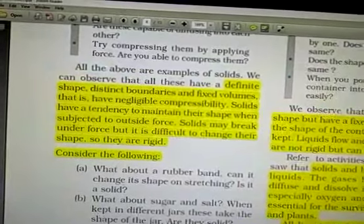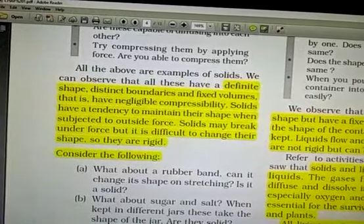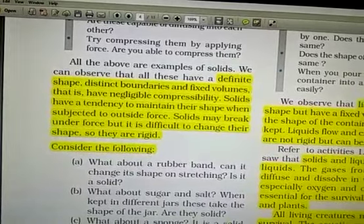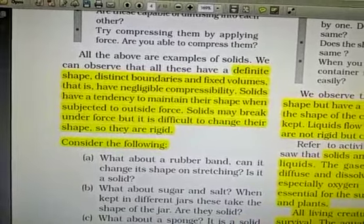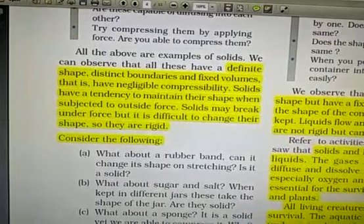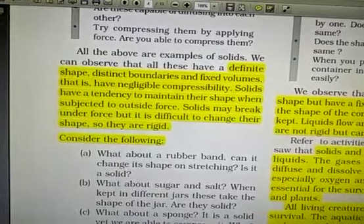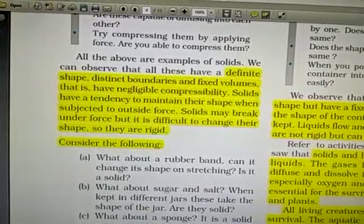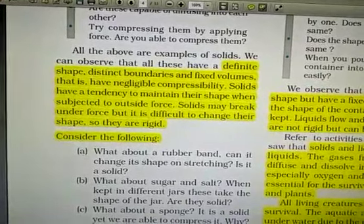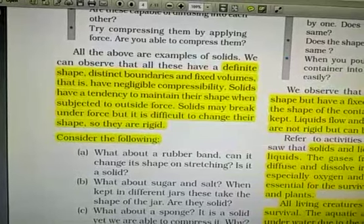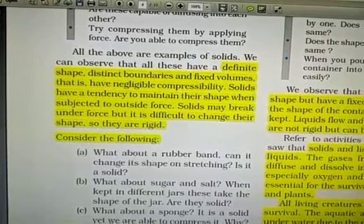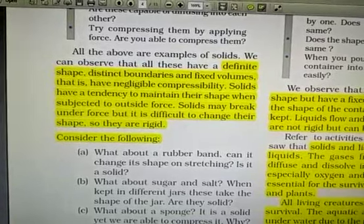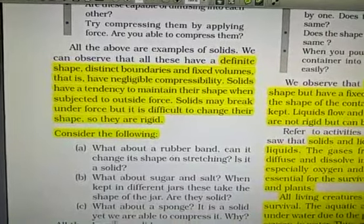If you try to compress them, they show very little or no compressibility. On the basis of this activity, we can say solids have definite shape, distinct boundaries, and fixed volume. They have negligible compressibility. Solids have a tendency to maintain their shape when subjected to outside force. Solids may break under force, but it is difficult to change their shape as they are rigid. They are not flexible. Rigid and flexible are opposite to each other.